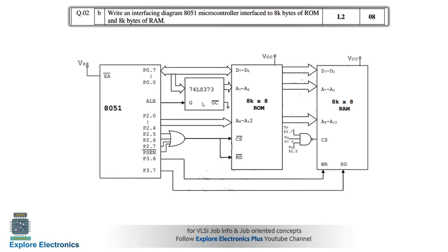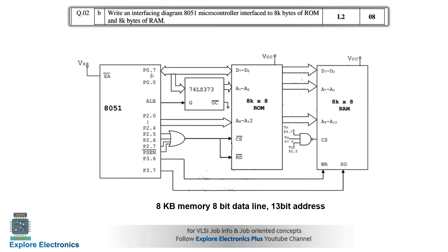There is an address latch or decoder to fetch the address. The write, read, and chip select signals come from Port 2. This applies for both ROM and RAM — both are 8-bit wide and require address and control signals. The write and read pins come from the third port. The main thing to explain is the ports used, the size of address and data buses, and which ports are connected to address, chip select, read, and write signals.